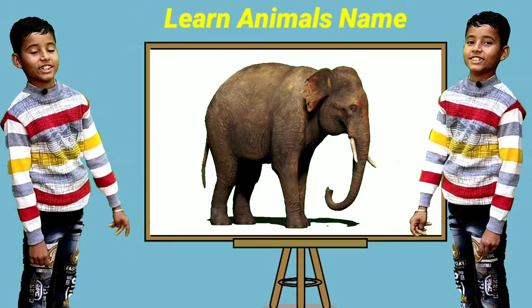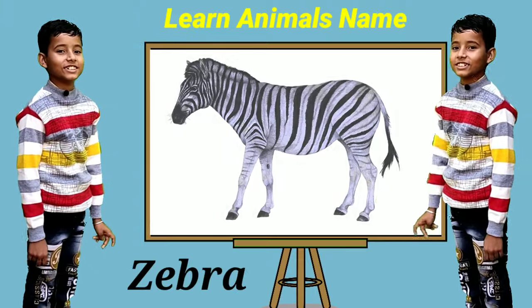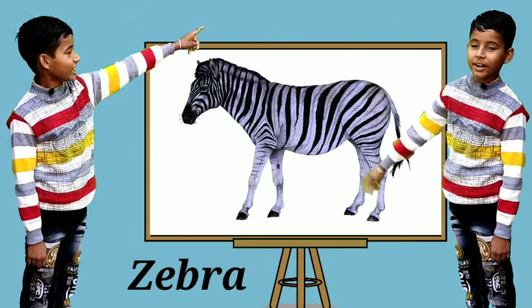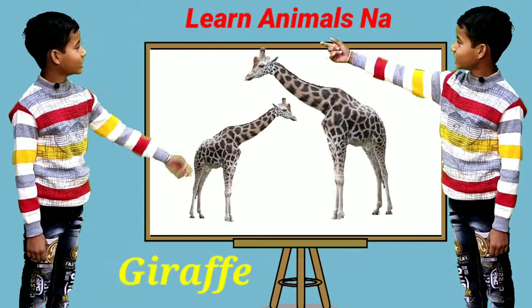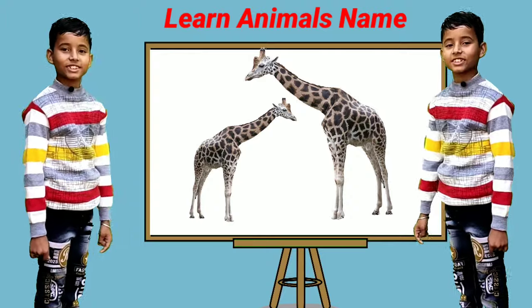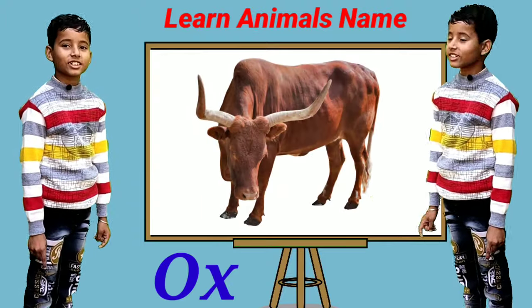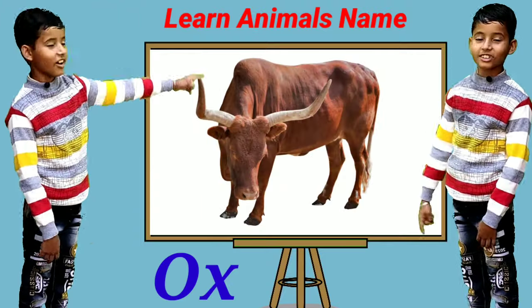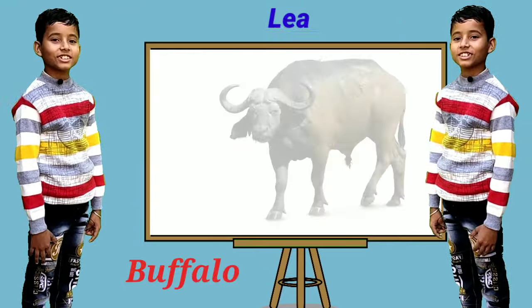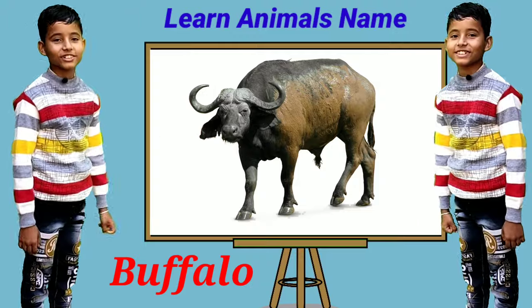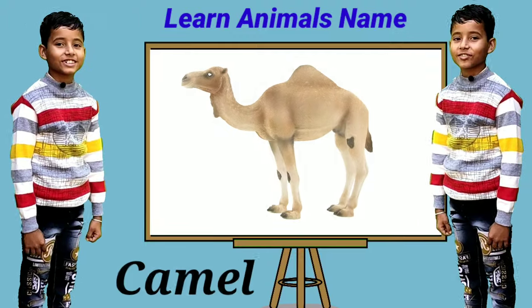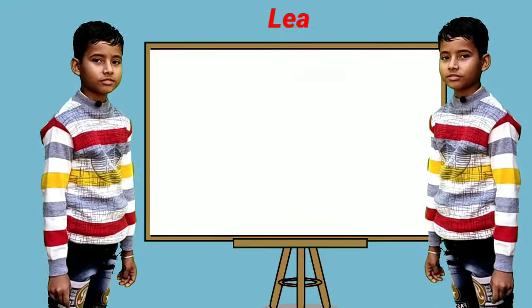This is an elephant. This is a zebra. This is a deer. This is a hawk. This is a buffalo. This is a camel.